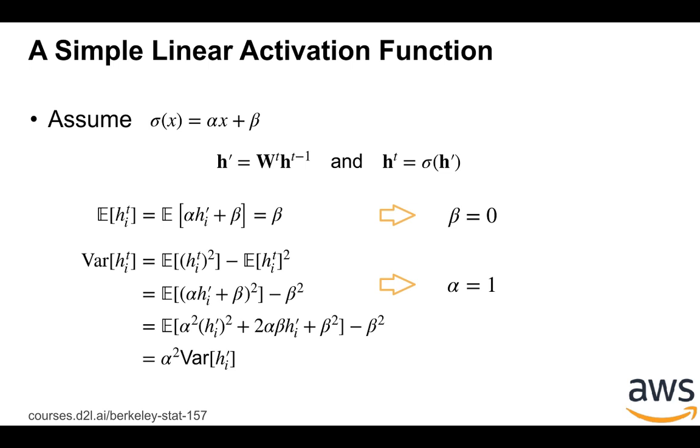Then if β is zero, and we can do a bunch of other things here, we know that the variance of ht equals to α² times the variance of h'. So because the variance of h' is already constant, then α should be equal to one.